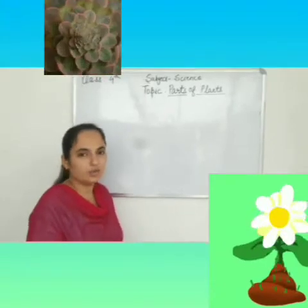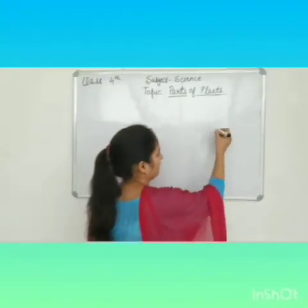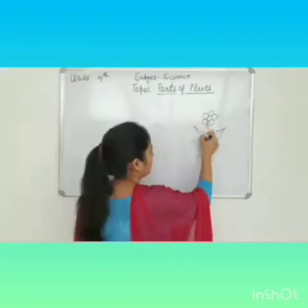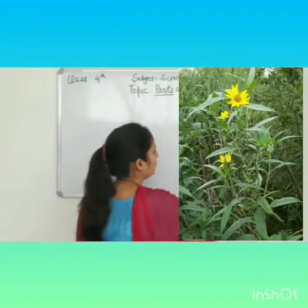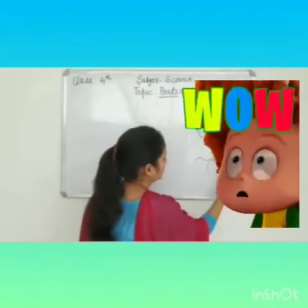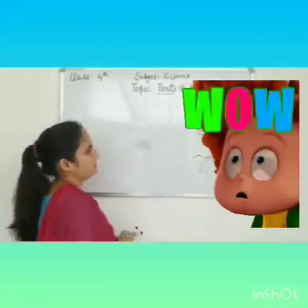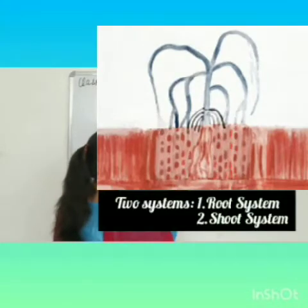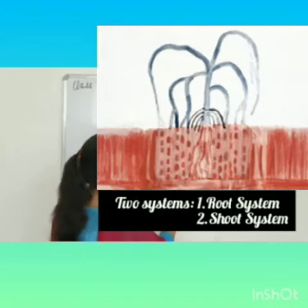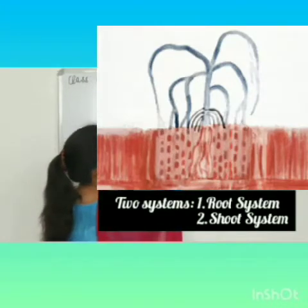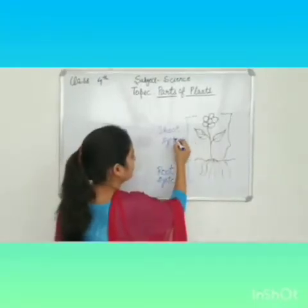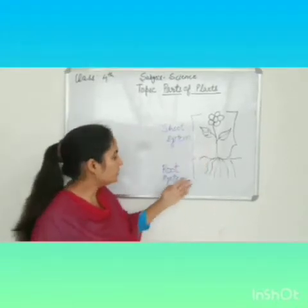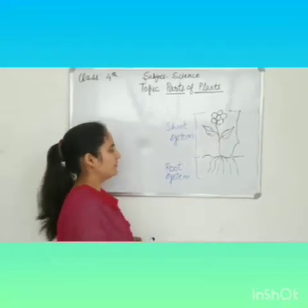You might have seen many plants in your surrounding. You generally see the upper part of the plant. Suppose I am drawing here a flower plant. So you are able to see only this much part of a flower, but there is also another part. So a plant consists of two systems. One is its root system and the second one is shoot system. So generally we are able to see this shoot system, and the root system is under the soil. So firstly, let's talk about the root system.